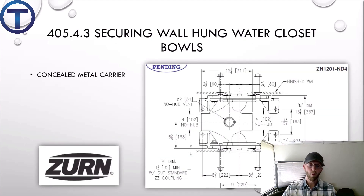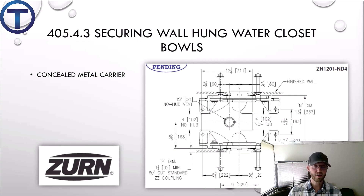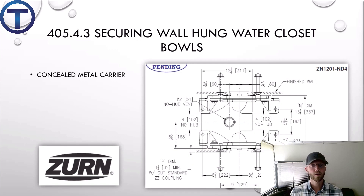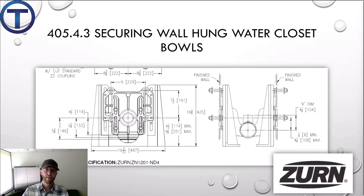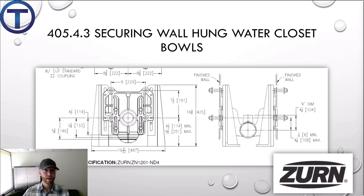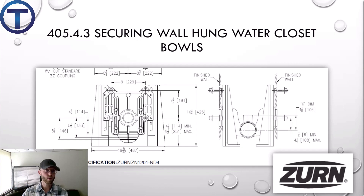For wall-hung fixtures, they have to be concealed inside the wall in a chase — a space where these big cast-iron units are built. They have bolts that protrude through the wall, plus a barrel or pipe that connects to the toilet and conveys the waste. Zurn is one manufacturer of these; they have big cast-iron carriers with face plates and adjustable bolts so you can get the right height. When it's time to set the fixture, by setting these bolts correctly you can get your toilet elevation right for a regular height or ADA height.